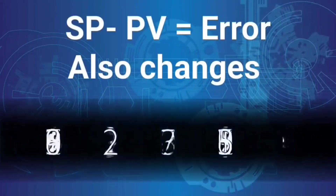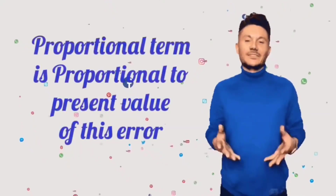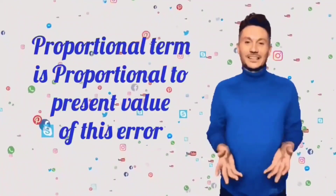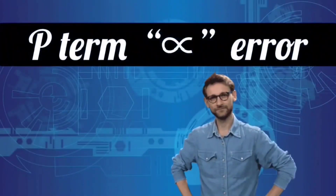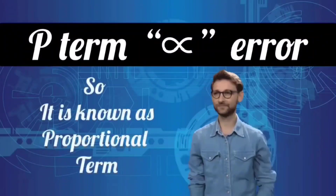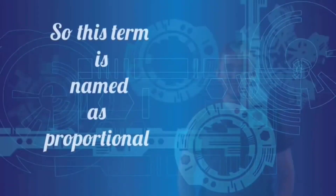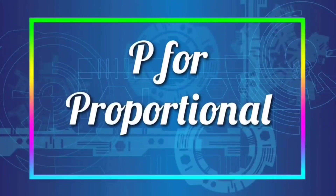So the difference, means error between them, also keeps on changing. The proportional term of PID controller is proportional to the present value of this error. Now, because this term is proportional to the error, it is called a proportional term. P term is clear.